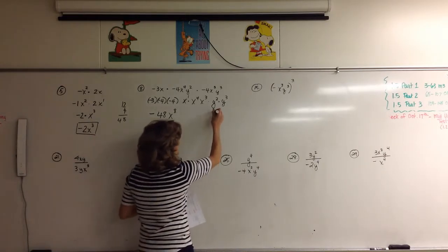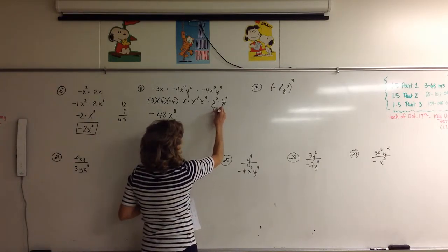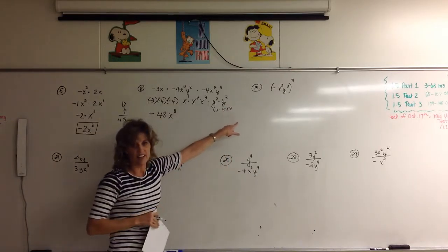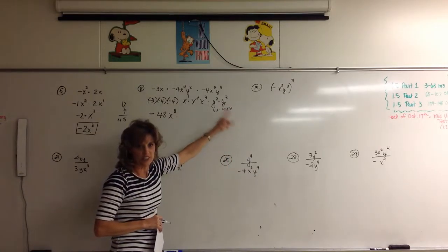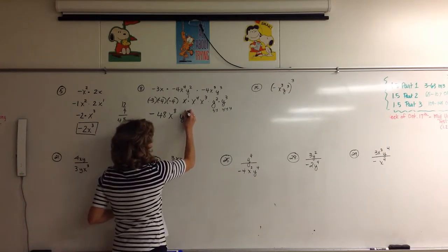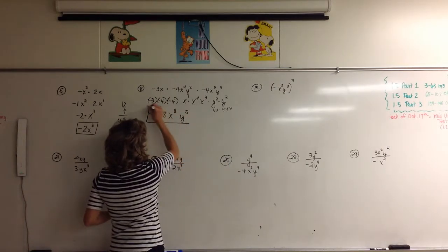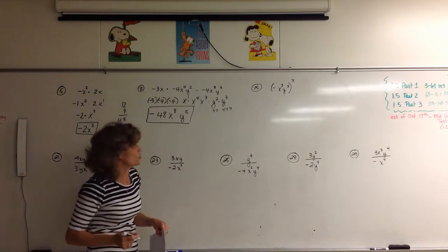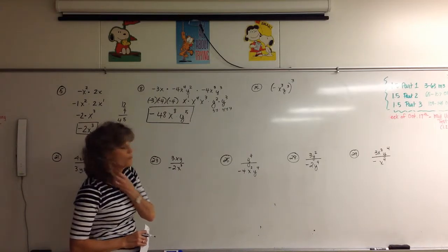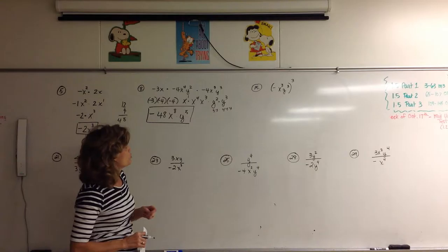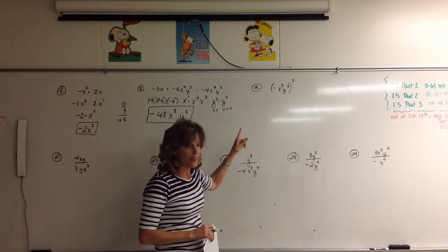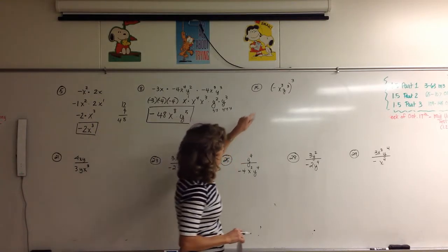X to the eighth. And then we're going to have to multiply the y's — y squared times y to the third. We've got two bases that are the same. It means two y's multiplied and three y's multiplied, so we just add two plus three: y to the fifth.